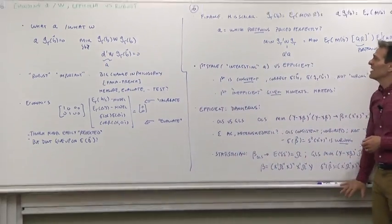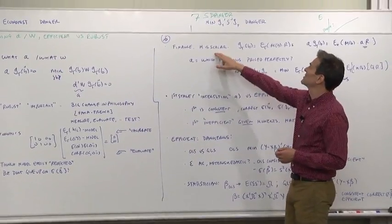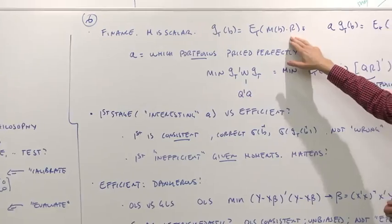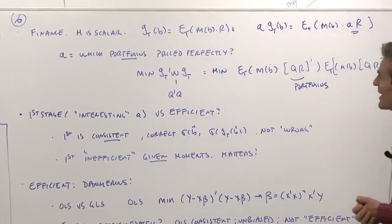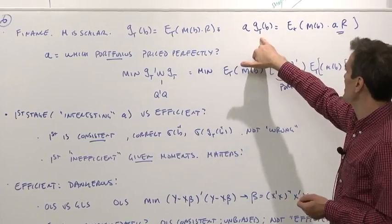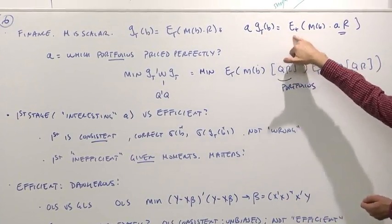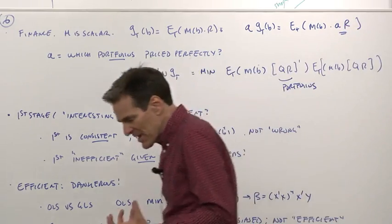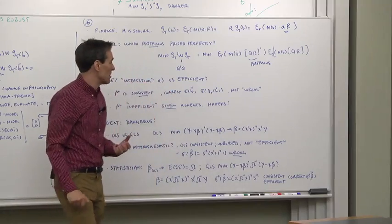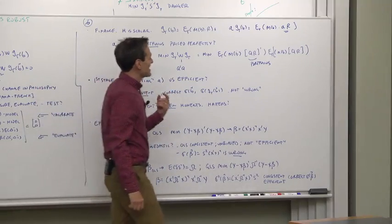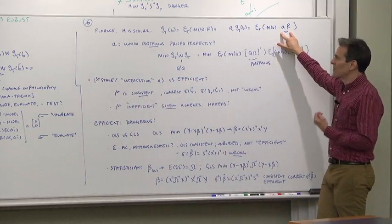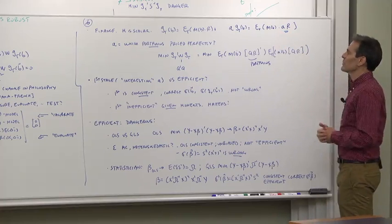Now in finance, M is a scalar. So our GT of B, our moments are all M times return. The vector part comes out of the return part. And notice A GT of B is the same thing as expected MA times return. So when we think about which combinations of moments do we want to set to zero, we are asking exactly the same question as which portfolios do we want to price perfectly? You can state the question the same way.